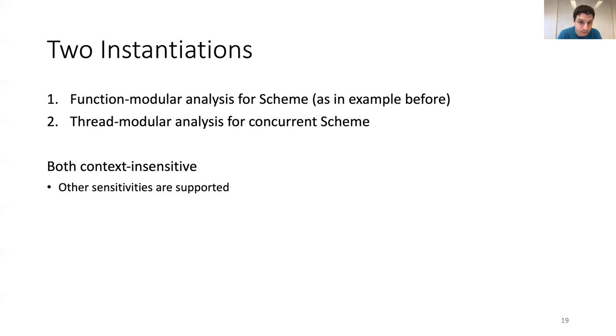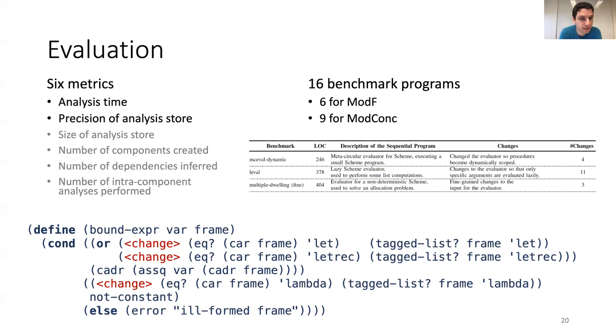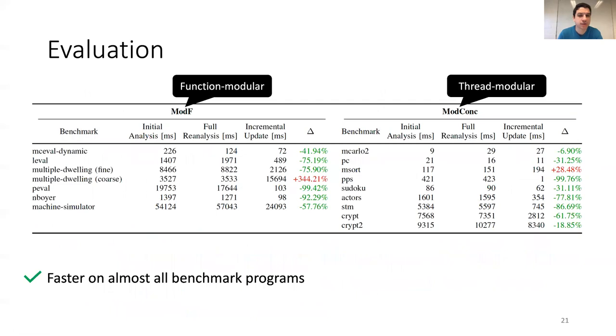So, then, we have evaluated the approach using six metrics, of which I will discuss two. And for this, we have used 16 benchmark programs, six for a function modular analysis, and nine for a thread modular analysis. And we have manually applied changes to these programs, and these vary, for example, here you see a fragment of a benchmark program in which we have extra abstracted common functionality into a function, and then replace this functionality by a function called throughout the program.